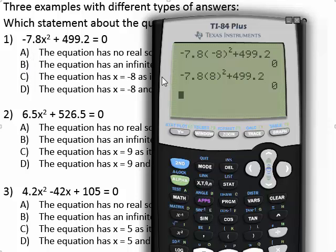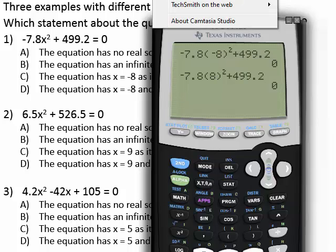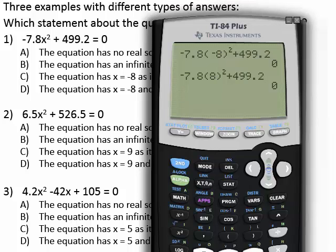So for the first one if we check all of the answer choices it looks again like d is going to be the correct answer choice. Because both negative 8 and positive 8 check out.